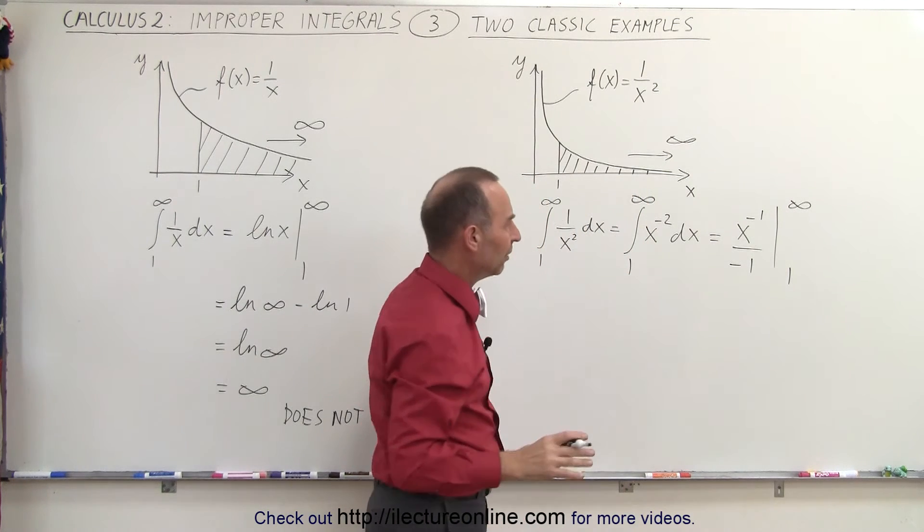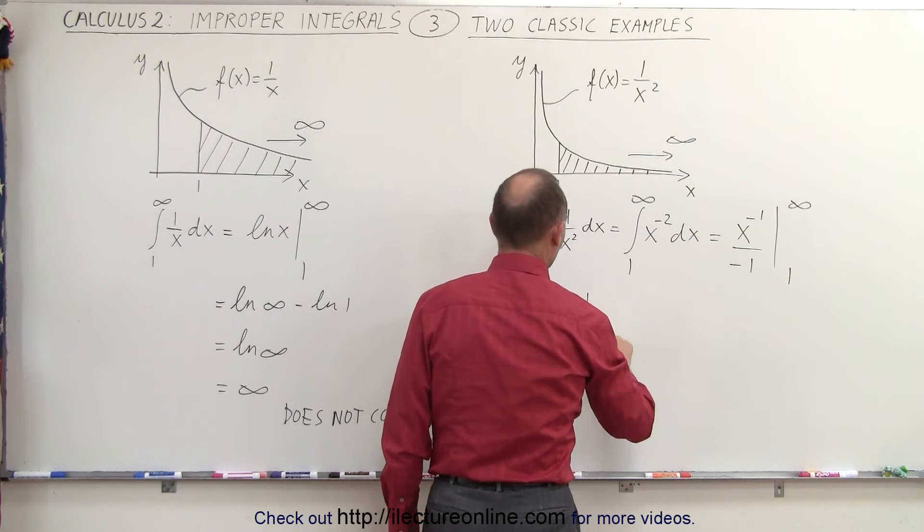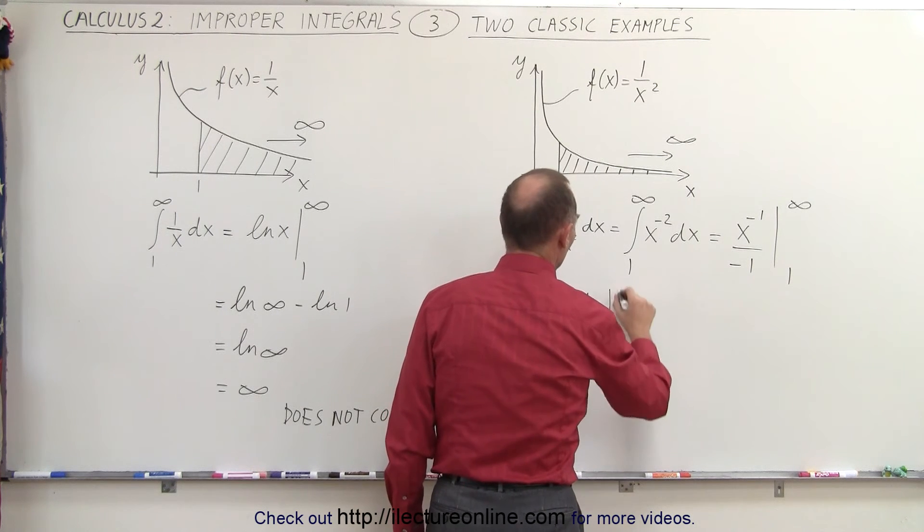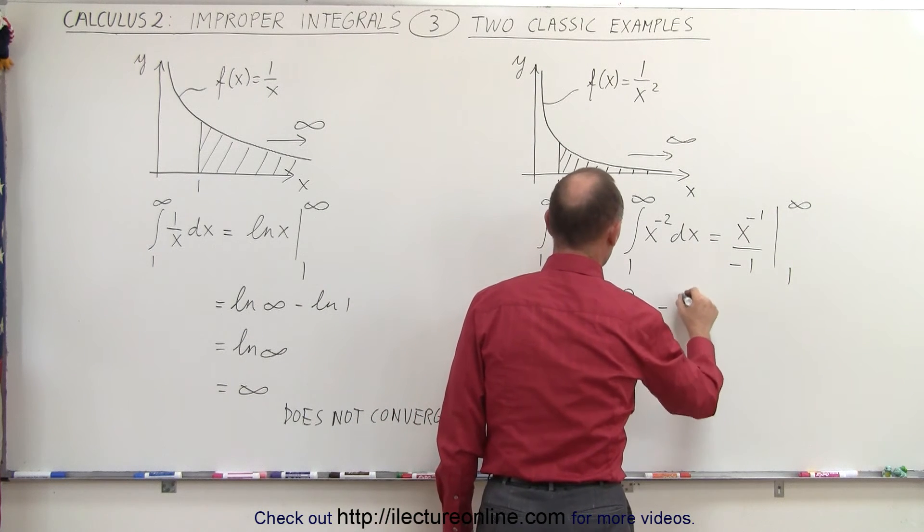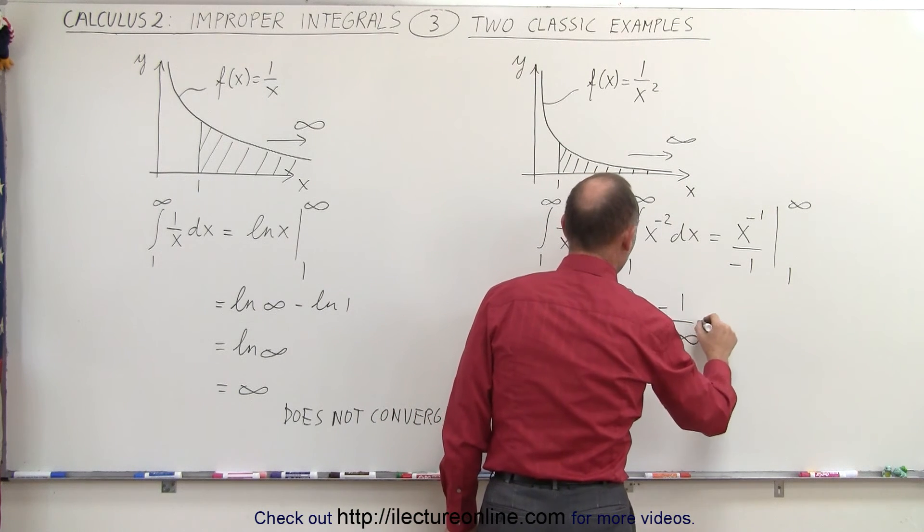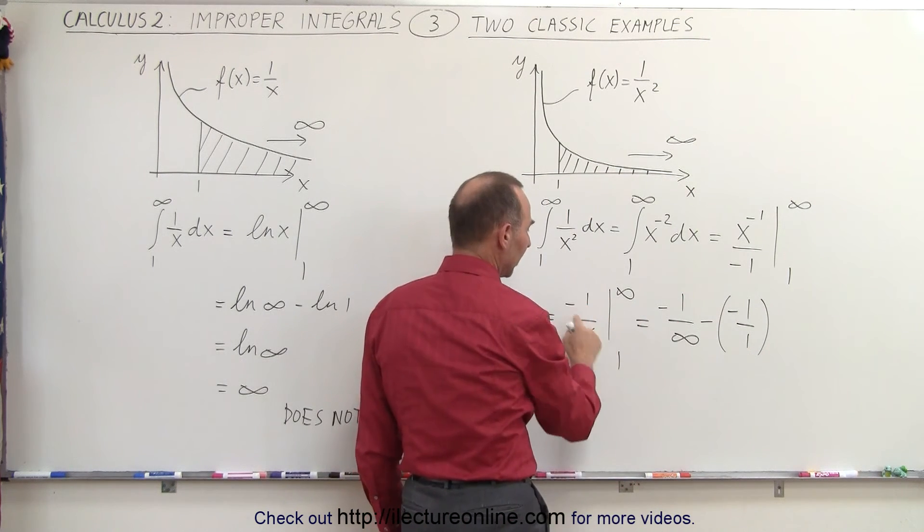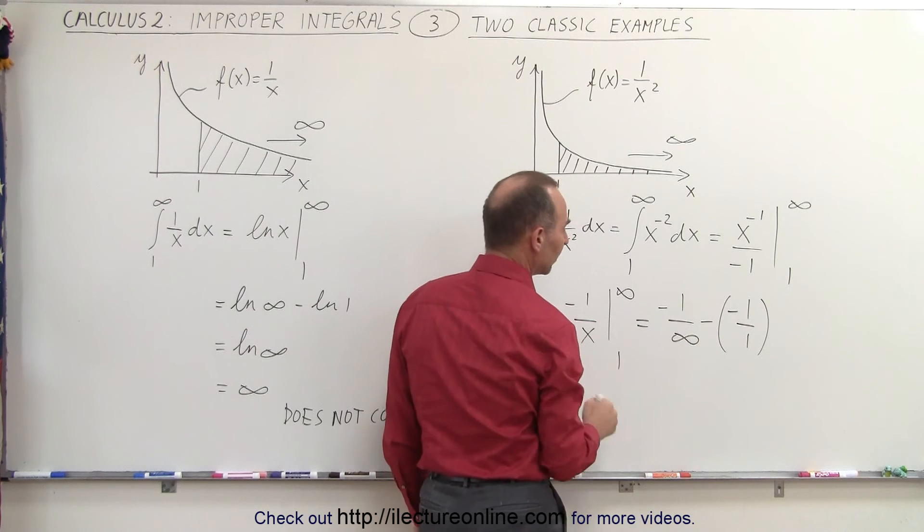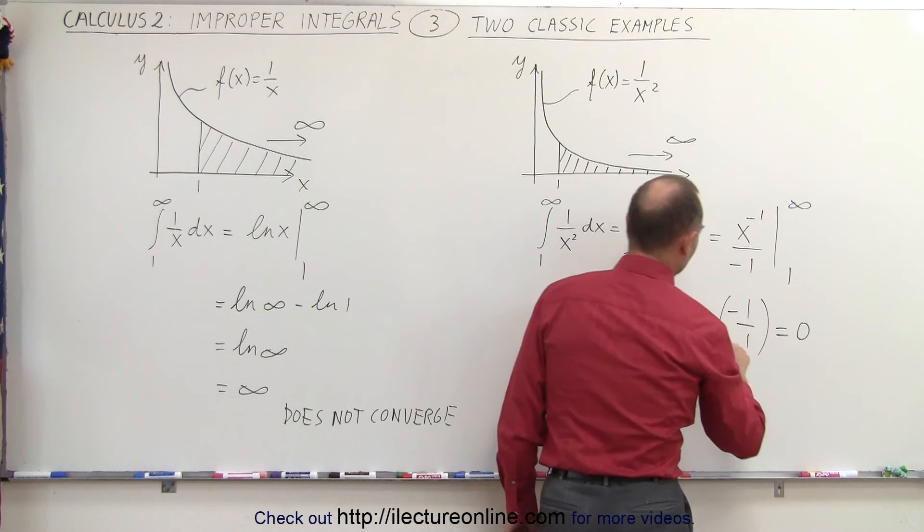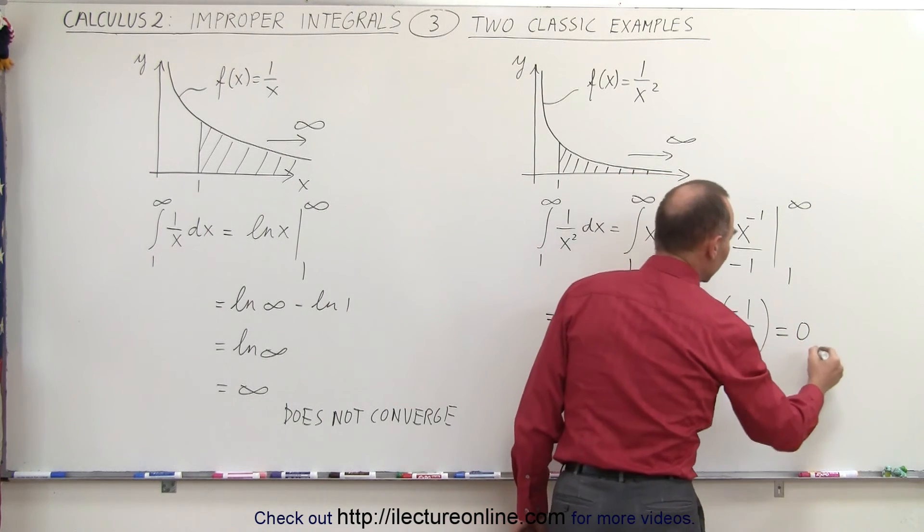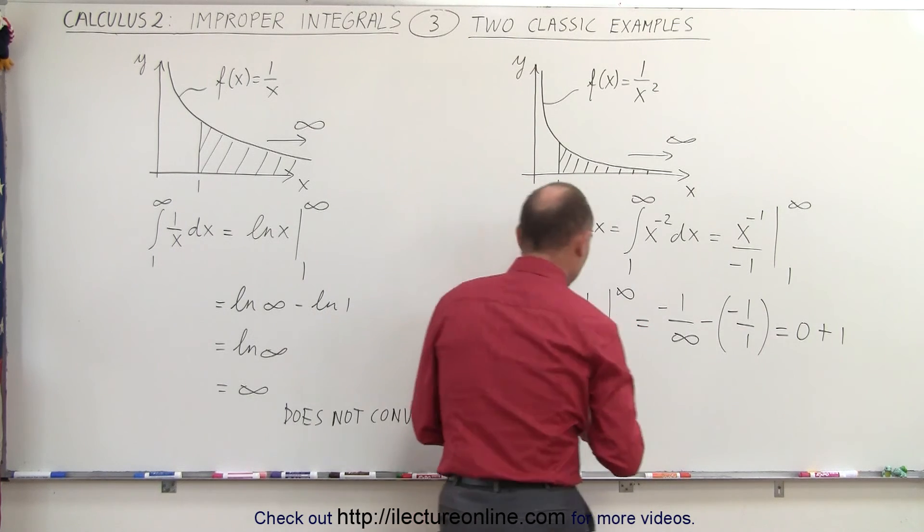Rewriting it just a little bit so it looks a little better, this is equal to minus 1 over x, evaluated from 1 to infinity. So now when we plug in the limits, we get the following. This is equal to minus 1 over infinity minus minus 1 over 1. So we plug in the upper limit and subtract when we plug in the lower limit. Now negative 1 over infinity, that's always going to be 0. And the negative times the negative is positive, so it's 0 plus 1 or 1 is the limit.